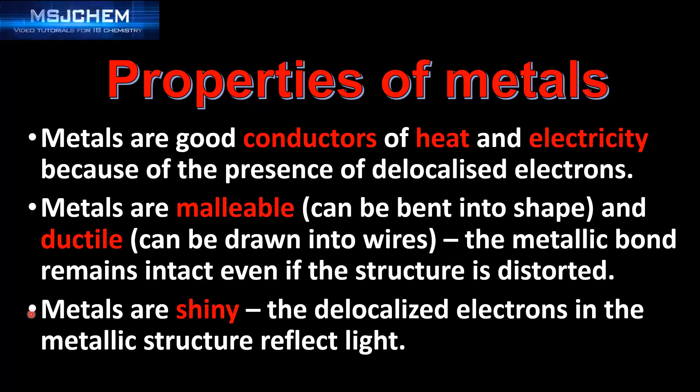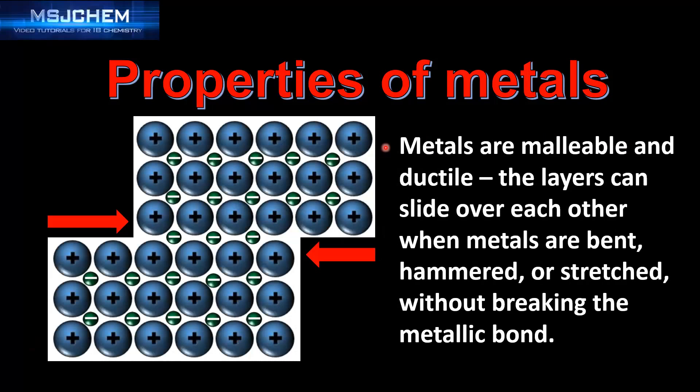Metals are shiny because the delocalized electrons in the metallic structure reflect light. Metals are also malleable and ductile.